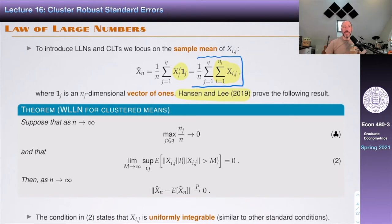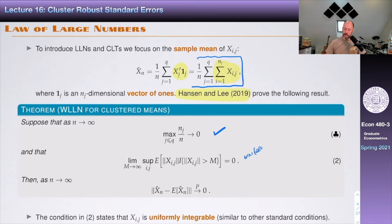The theorem states — suppose that as N goes to infinity, the maximum over J of NJ/N goes to zero, and we have a uniform integrability condition. Then by a law of large numbers, X-bar minus the expected value of X-bar converges in probability to zero. The uniform integrability condition is a standard regularity condition needed for law of large numbers and CLTs; we won't discuss it further.